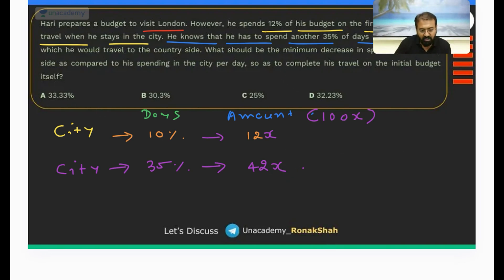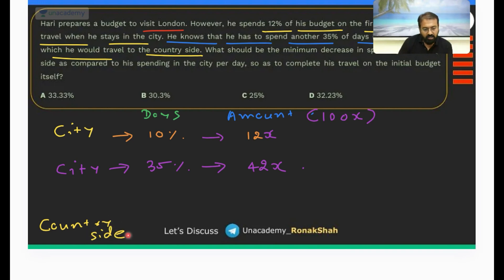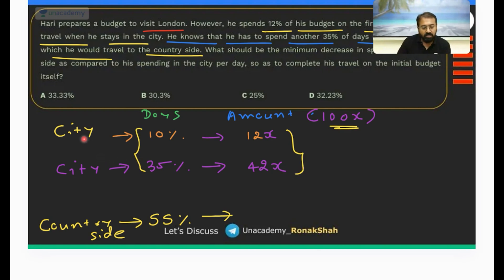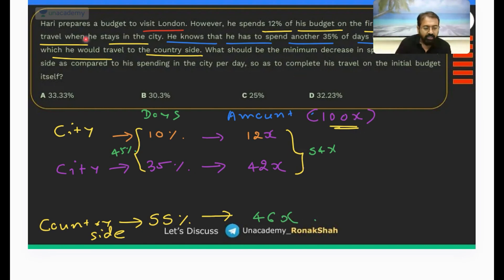Now the question is after this he would travel to the countryside. How many days are left? He has already spent 45% of the days in the city, so in the countryside he's going to spend 55% of the days. And what is the budget amount left? In 45% of the days he consumed 54x, so he's left with just 46x.